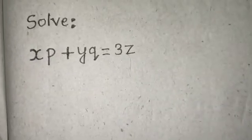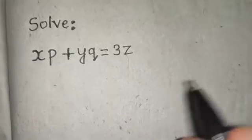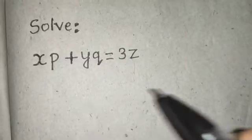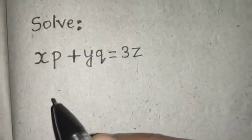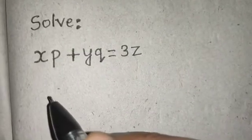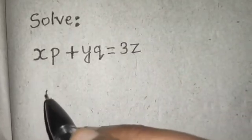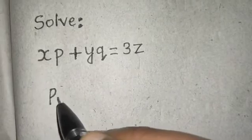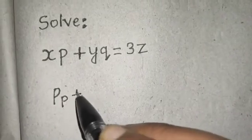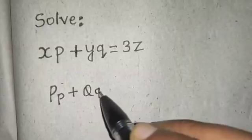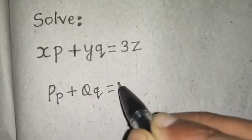So let's proceed. First of all, you must be knowing that linear PDE of Lagrange's, if you want to solve this by Lagrange's format, it is of the form PP plus QQ equals to R.